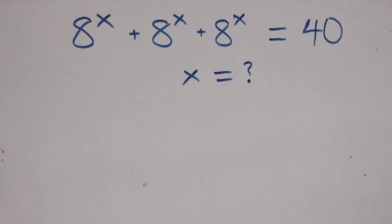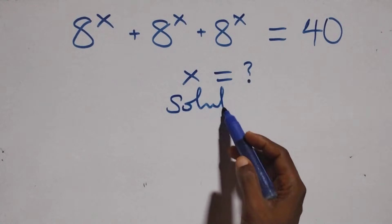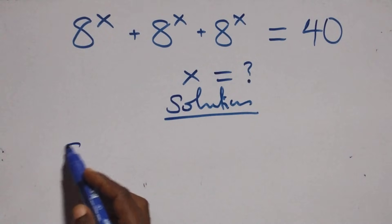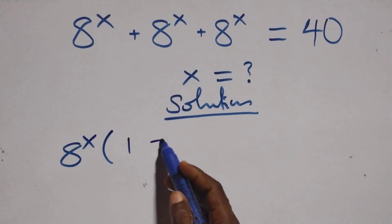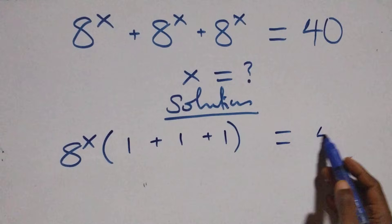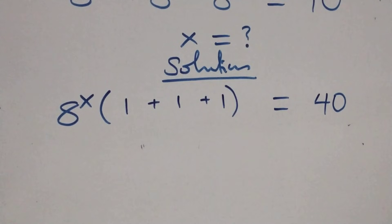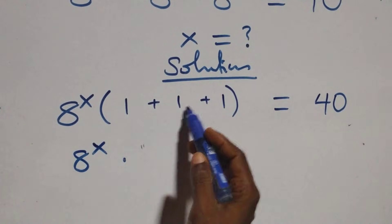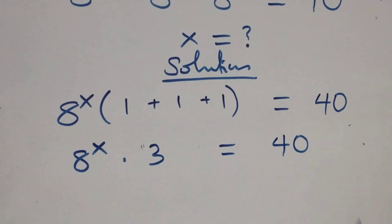Hello, you're welcome. Here we solve a nice exponential equation. We factor out 'a' raised to the power x, giving us a^x times (1 + 1 + 1) equals 40 on this side. This is the same as a^x times 3 equals 40.